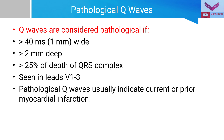Pathological Q-waves are considered pathological if they are more than 40 milliseconds wide, or more than 1 mm (more than 1 small square) wide, more than 2 mm deep, or more than 25% of the depth of the QRS complex, and especially when they are seen in V1 to V3.